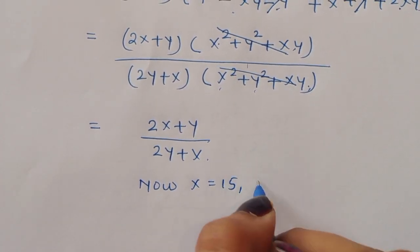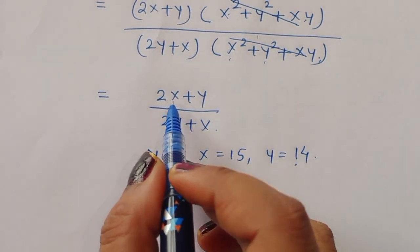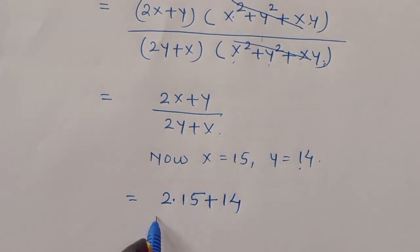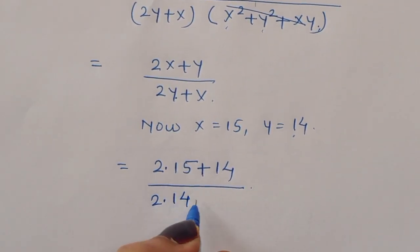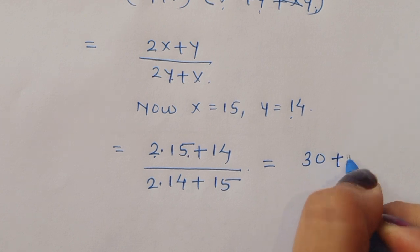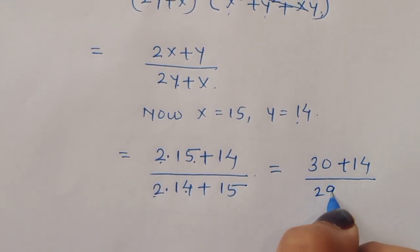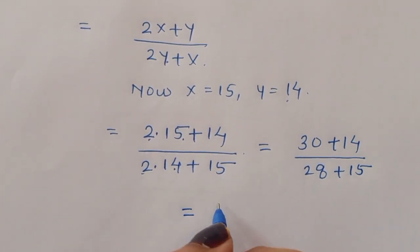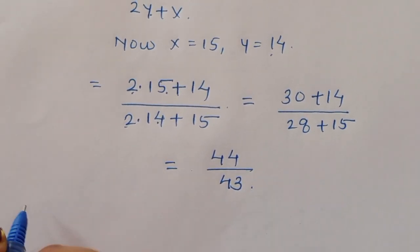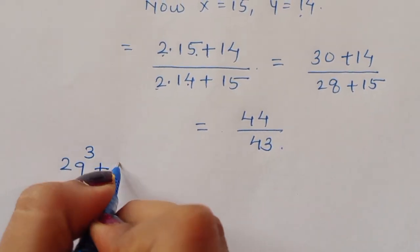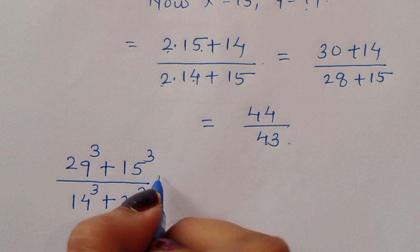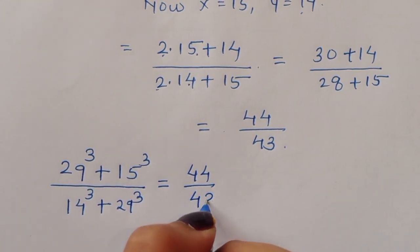Now substituting x = 15 and y = 14: the numerator is 2(15) + 14 = 30 + 14 = 44, and the denominator is 2(14) + 15 = 28 + 15 = 43. Therefore (29³ + 15³) divided by (14³ + 29³) = 44/43. This is the solution.